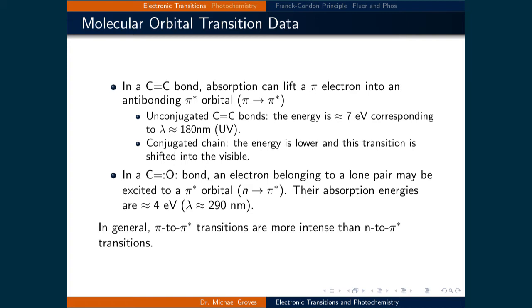For carbon-oxygen double bonds, the energy of the transition is about 4 electron volts, which corresponds to about 290 nanometers. This is in the ultraviolet part of the spectrum. The carbon-carbon double bond pi to pi star transition is typically more intense than the unbonded electron to pi star transitions.